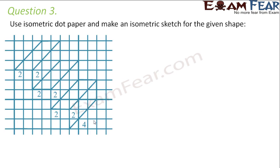Question number three: use isometric dot paper and make an isometric sketch of the given shape. You have an oblique sketch that gives a rough idea of the image. Looking at it, you can clearly see that this length is 2 units, this length is 2 units, this is 2 units, this is 2 units, and so on. The other dimension given is length 4.